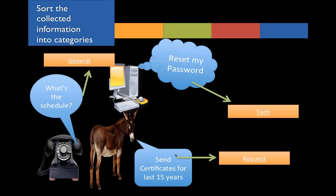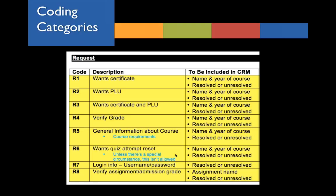We put all of the requests into an Excel spreadsheet in sequential order. Requests start with an R, so all of our request codes start with R, and then we went one, two, three, four, and so on. We included a description — so R1 means the person requested a certificate, and we wanted to make sure to include what year they were requesting a certificate for and, if necessary, the name of the course. We also wanted to know whether it had been resolved or unresolved when the person entered it into CRM.